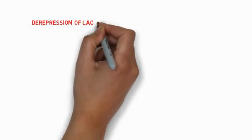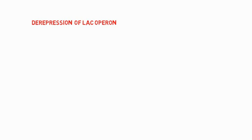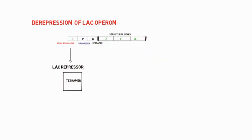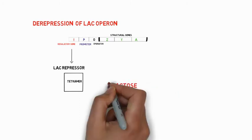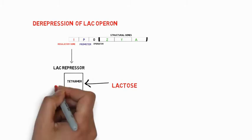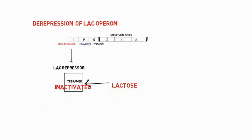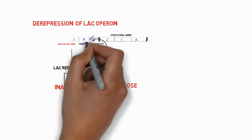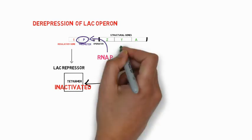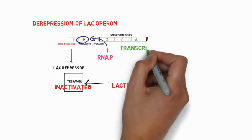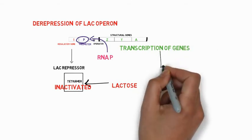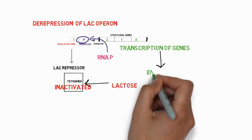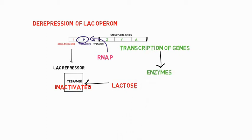Now the de-repression of the lac operon. When lactose is present, it binds to the lac repressor and changes its conformation and it is going to be inactivated. So it cannot bind to the operator but RNA polymerase binds to the promoter. So transcription of structural genes and translation produces the enzymes that are protein in nature and they break down the lactose.